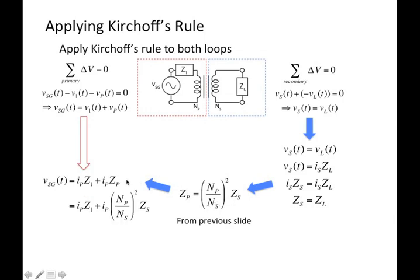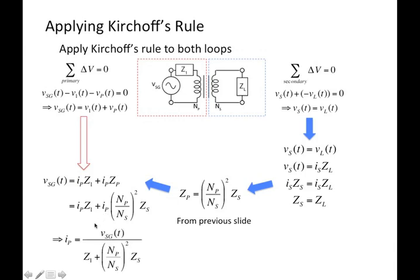We can substitute that in and find that the signal generator voltage is the voltage dropped across impedance one plus the voltage dropped across the primary. We can solve for the primary current, which just depends on things we know: impedance one, the impedance of the secondary (which is the load), the ratio of the number of turns, and the input signal.